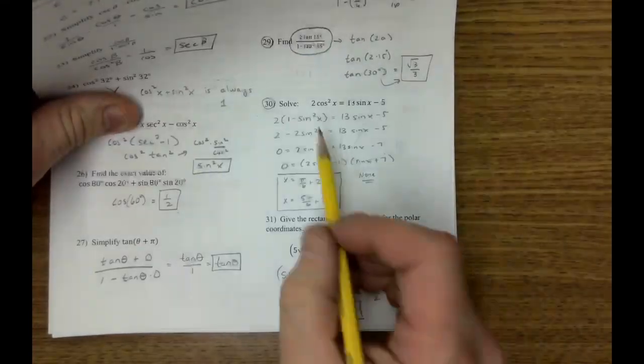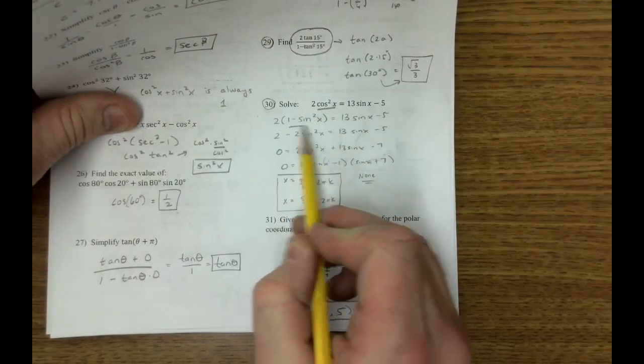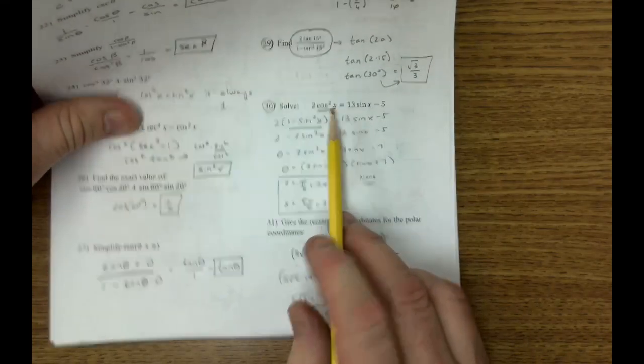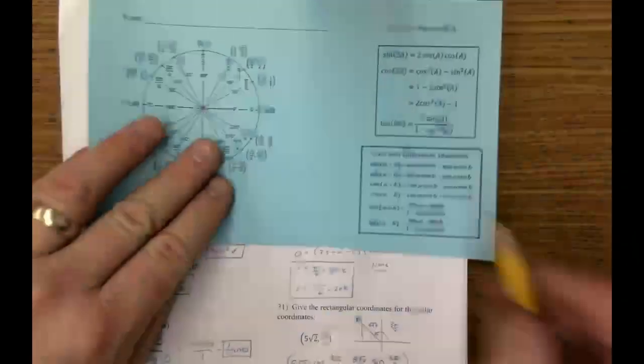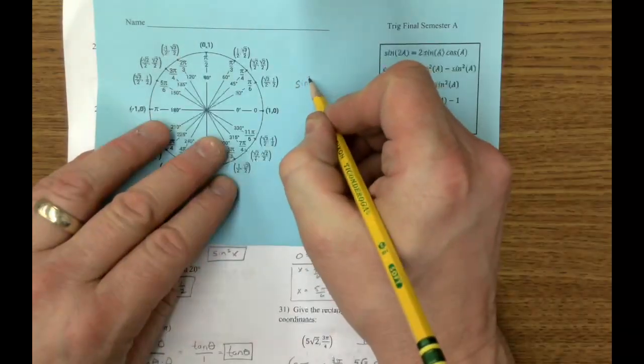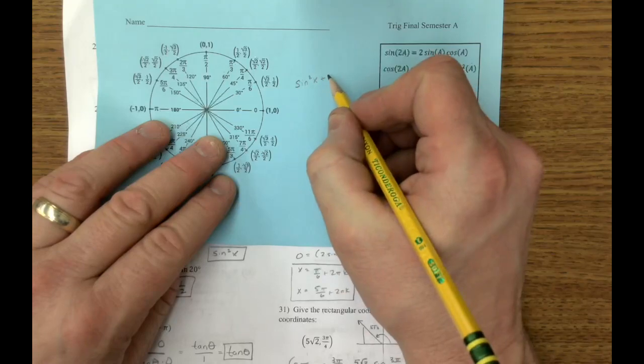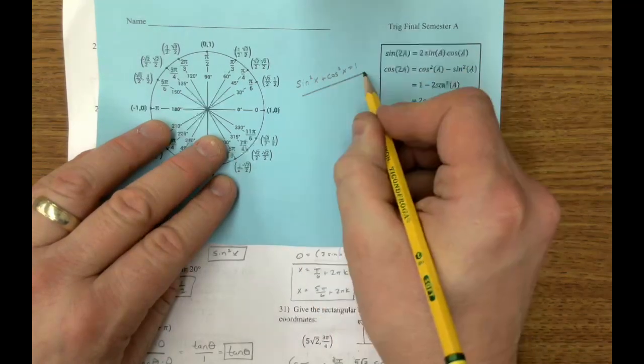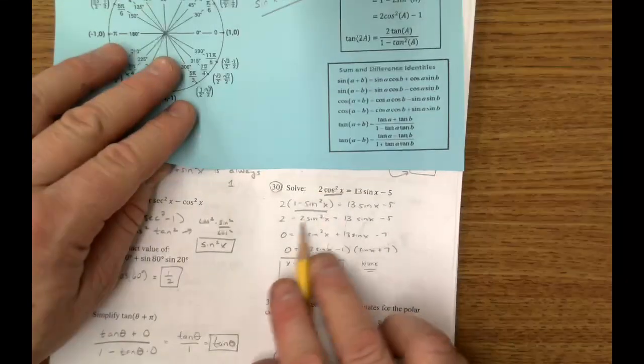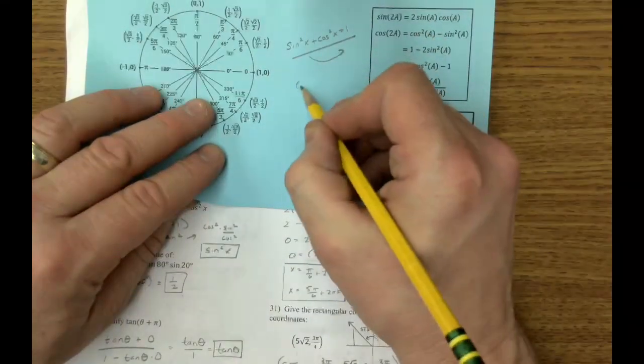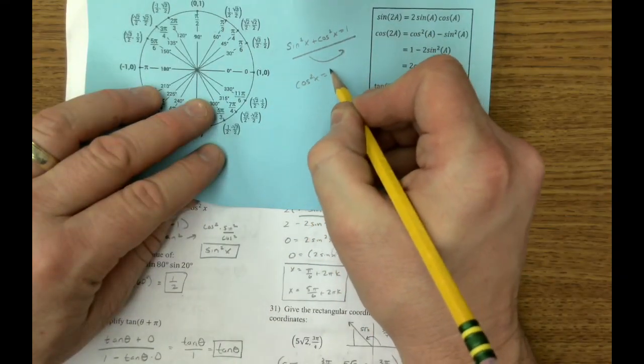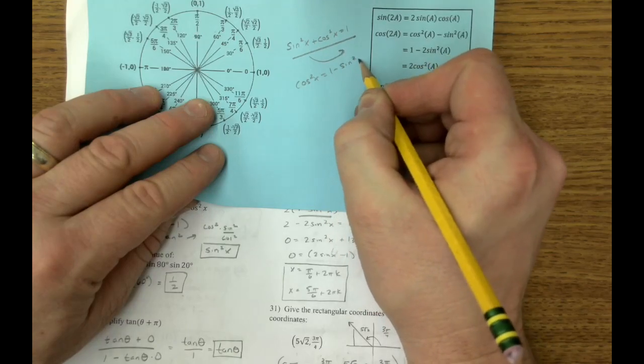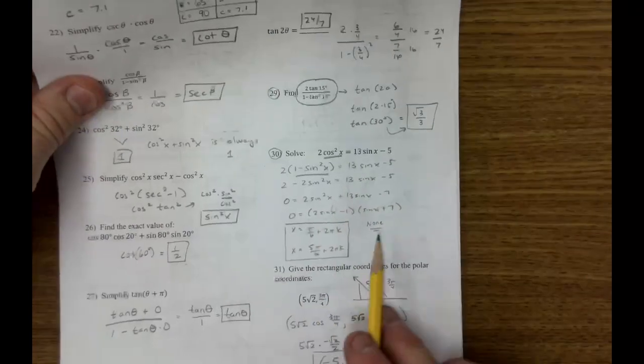On number 30, it's a solving equation problem. My first switch I'm going to make is this Pythagorean identity. If you don't have this written down on your blue sheet, make sure you write this. Because that sine squared of theta, of x or theta, cosine squared x is always 1. And from there, if I subtract away the sine, cosine squared x is 1 minus sine squared x. So that's the identity. Then I went ahead and I factored it and solved it.